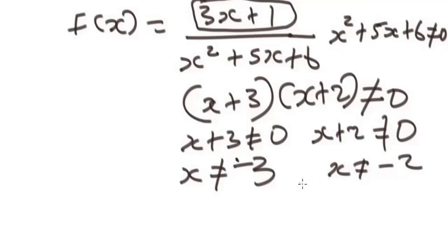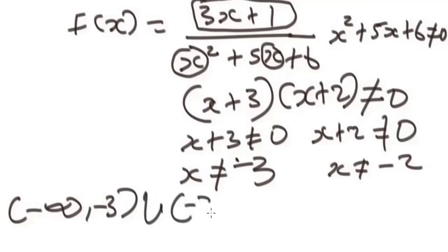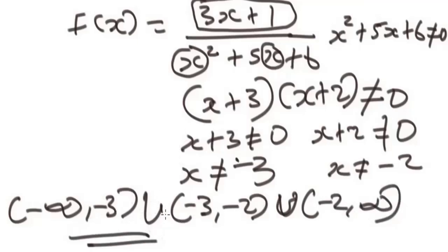So that will be the domain of this function, because only negative three and negative two, when you plug them in this value of the denominator results to zero, which is not meant to result to zero. So to present this domain in interval notation, it's going to be all numbers from negative infinity to negative three, but not including negative three, union, all values from negative three to negative two, but not including negative two, union, all values from negative two to infinity, but not including negative two. So that will be the domain of this function.